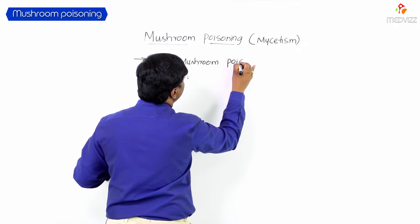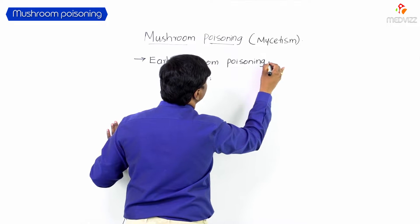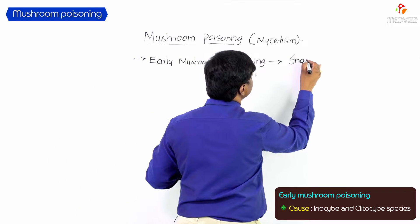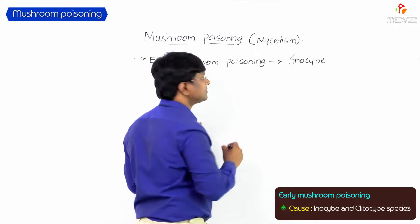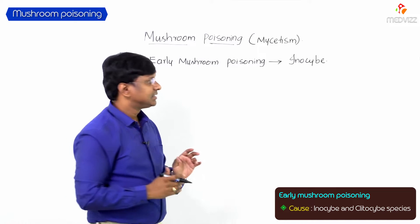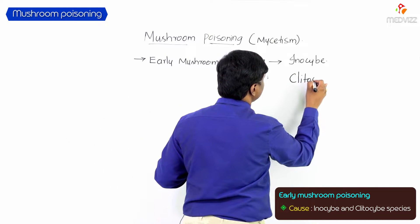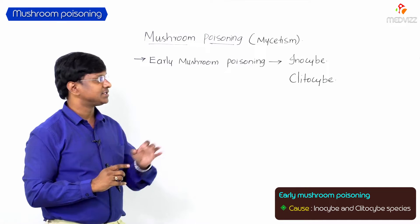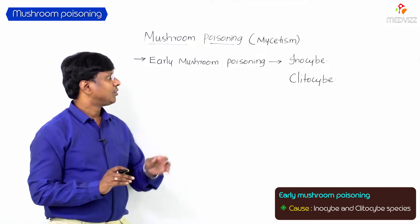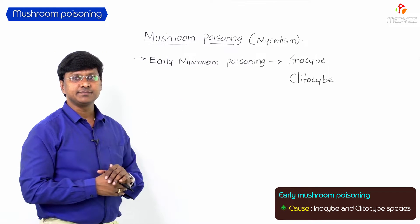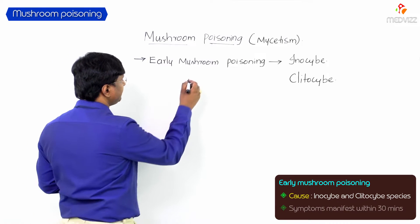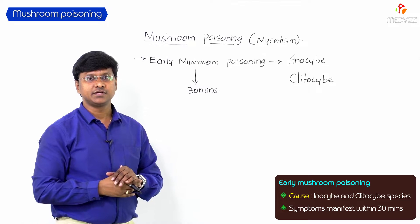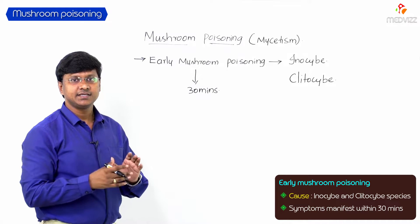Early mushroom poisoning is caused by two important species: the Inocybe species and the Clitocybe species. Both Inocybe and Clitocybe species cause early mushroom poisoning. The term 'early' means the symptoms manifest within 30 minutes of ingestion.